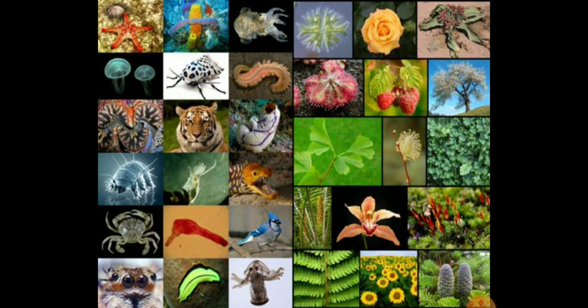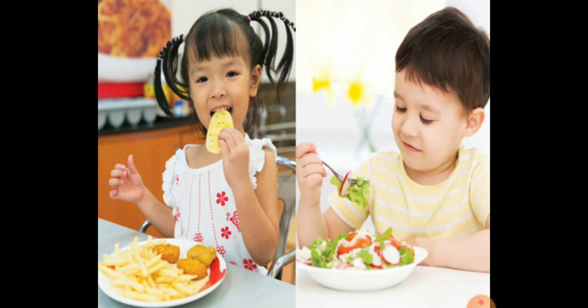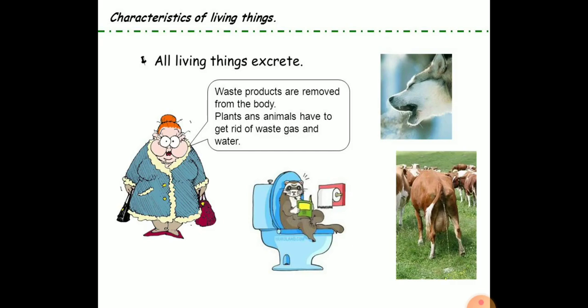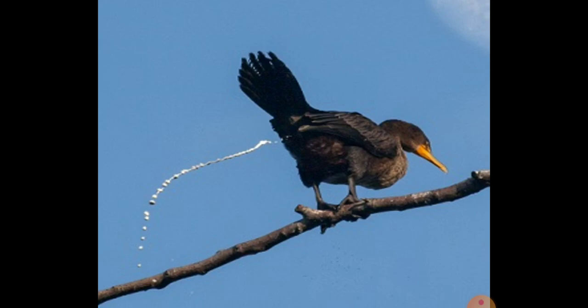All living organisms, whether they are unicellular or multicellular, need energy to perform basic activities of life, and this energy is obtained from food. The basic activities include eating food and excreting waste. Excreting waste means removing the waste material from the body.